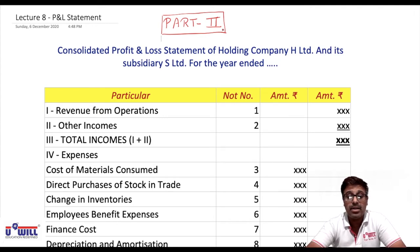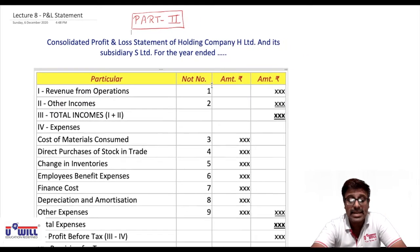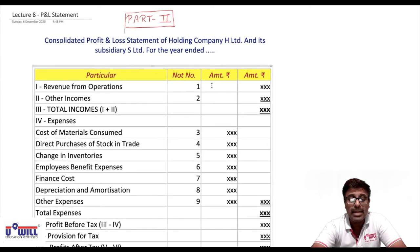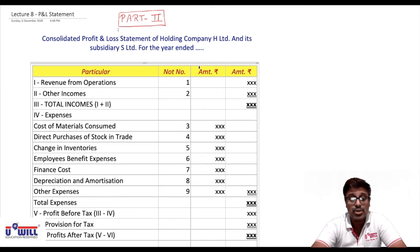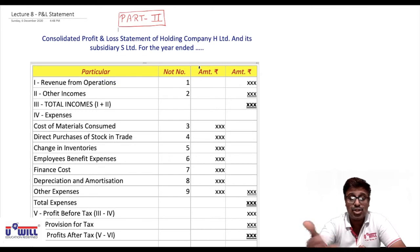The heading is: Consolidated Profit and Loss Statement of H Limited and its Subsidiary S Limited for the year ended. This is the format of profit and loss statement we already studied in second year BCom. Pause the video and note down the format completely up till profit after tax, then I'll share the trick to remember this format.